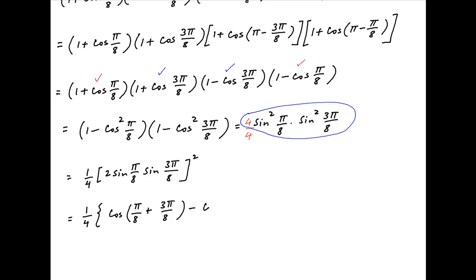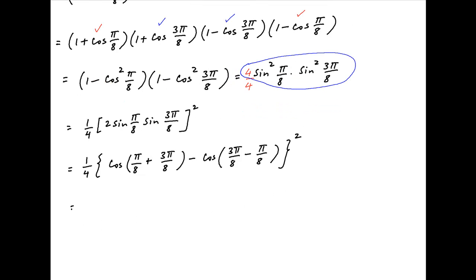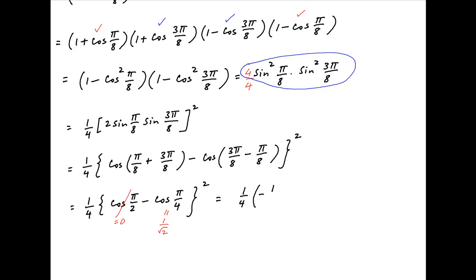Using the product-to-sum formula, 2·sin(π/8)·sin(3π/8) = cos(π/8 - 3π/8) - cos(3π/8 + π/8) = cos(π/4) - cos(π/2). Wait — this simplifies to (1/4)[cos(π/2) - cos(π/4)]². Since cos(π/2) = 0 and cos(π/4) = 1/√2, the expression equals (1/4)(−1/√2)² = 1/8, which is the required answer.